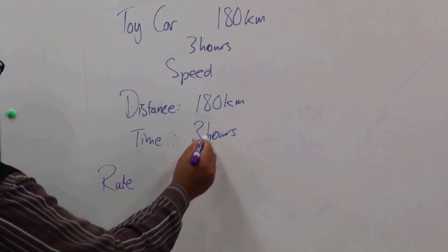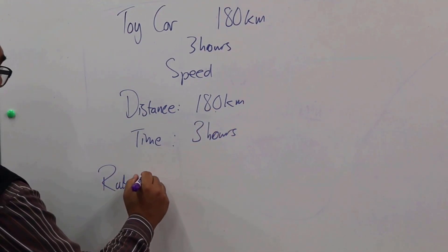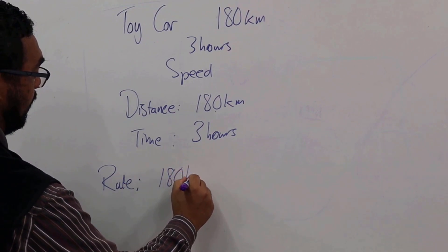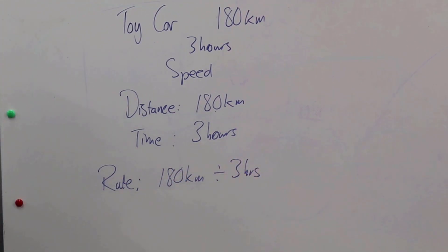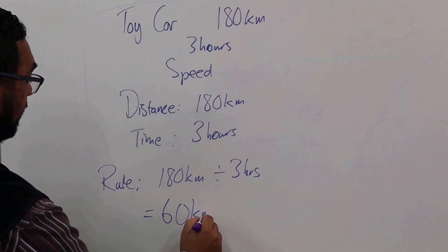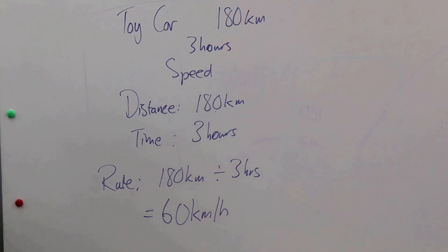And I'm going to divide the one into the other. I'm going to say 180 kilometers divided by three hours. And what is that going to give me? That's going to give me 60 kilometers per hour. Boom, the car speed is 60 kilometers per hour. That means if it keeps the space, it will cover 60 kilometers every hour.